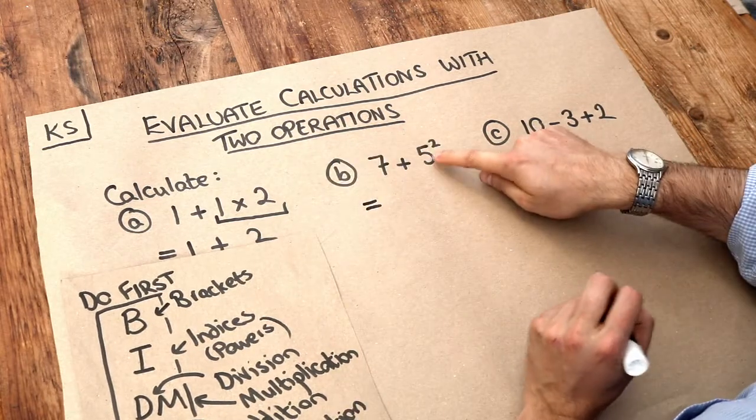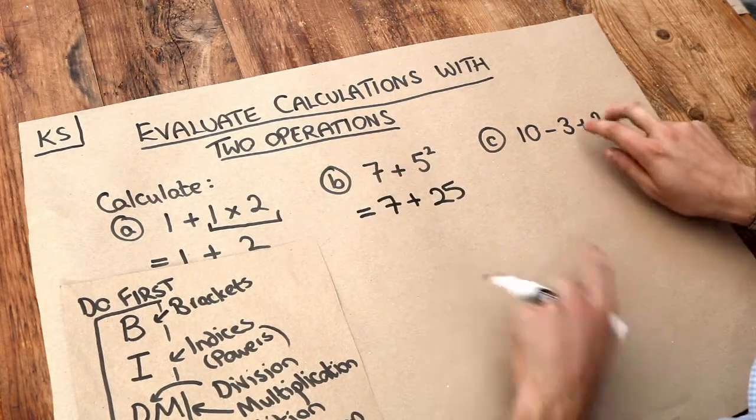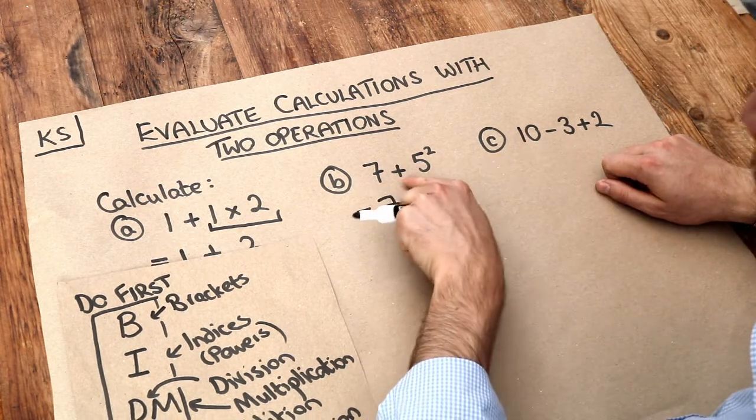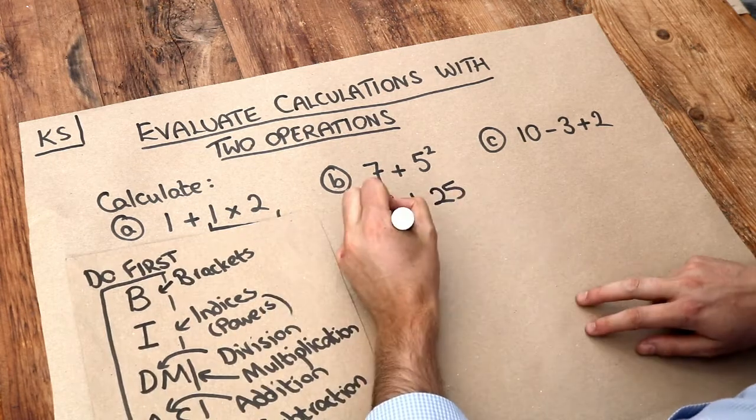So the power first: 5 squared is 25, and we're still doing the 7 plus that. So we can read this as 7 plus 5 squared, rather than 7 plus 5 squared, if that makes sense. And then 7 plus 25, that is just 32.